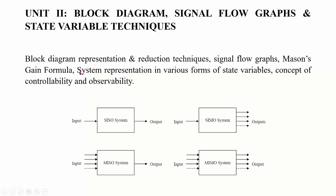Today we shall be starting Unit 2. The name of this unit is Block Diagram, Signal Flow Graph, and State Variable Techniques. The content includes block diagram representation and reduction techniques, followed by Signal Flow Graph and Mason's Gain Formula. Then we'll be representing systems in various forms of state variables, and discussing the concepts of controllability and observability.